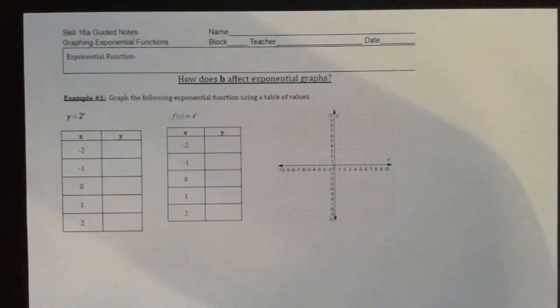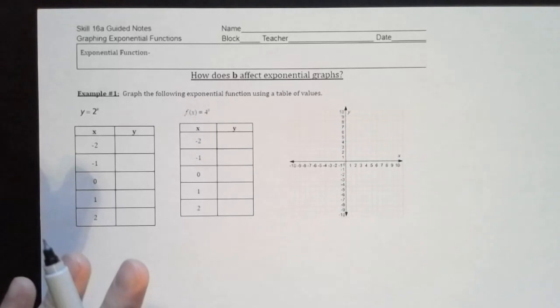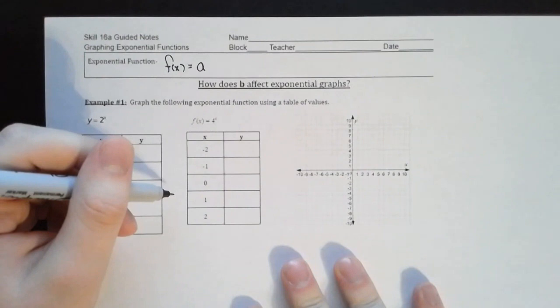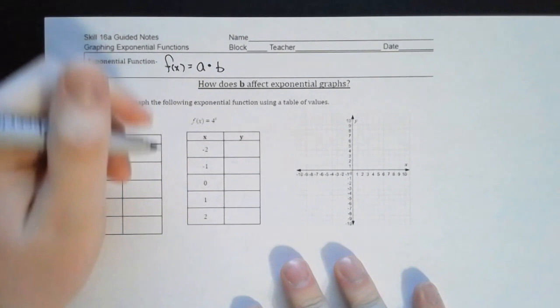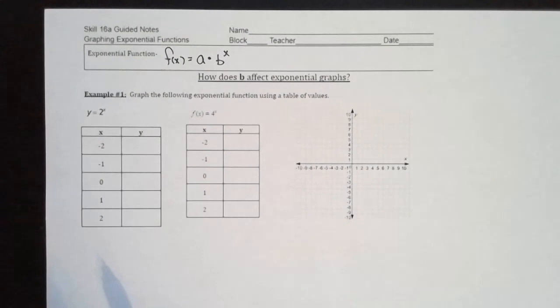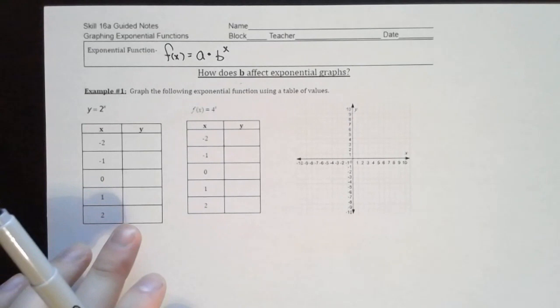Let's go ahead and turn to the notes. At the top it says exponential function, and we're going to write the general form. That is f(x) = a · b^x, where b is being raised to the x power. In today's lesson, we're going to talk about the a and the b value — how changing a and b affects what our graph looks like. First we'll look at how b affects the exponential graph, and then how the a value affects it.